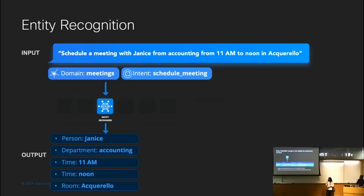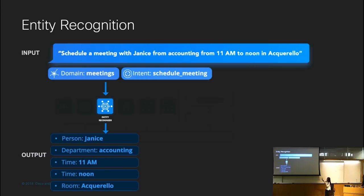So the recognized entities are things like a person name for Janice, department for Accounting, 11 AM and noon are time entities, and Aquarello is a conference room entity.